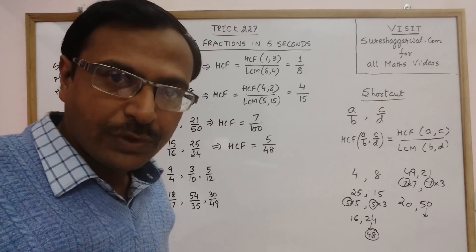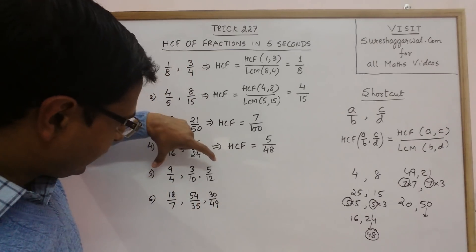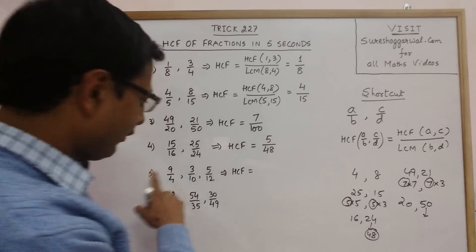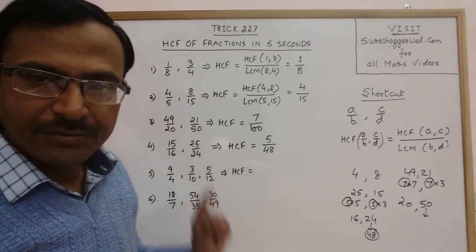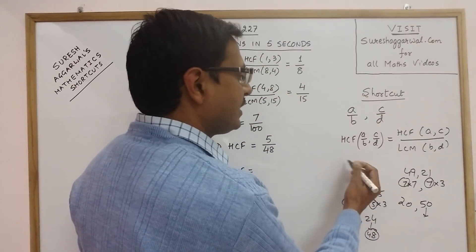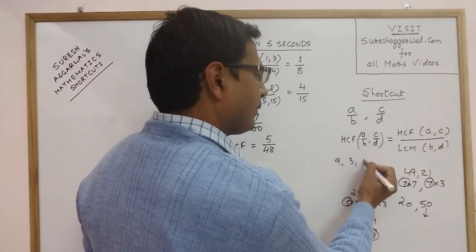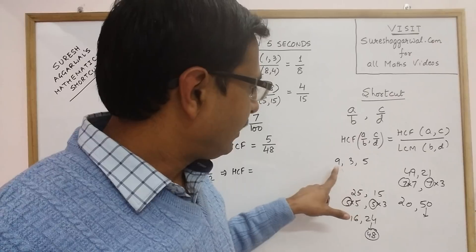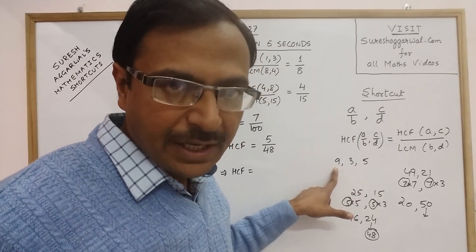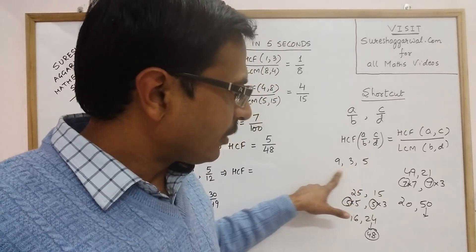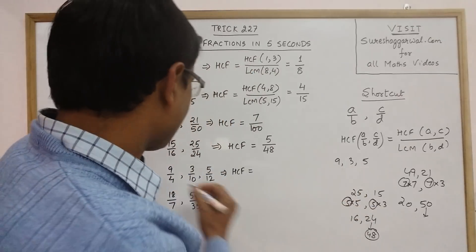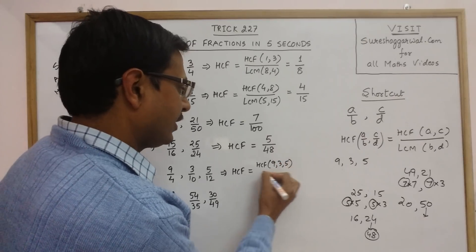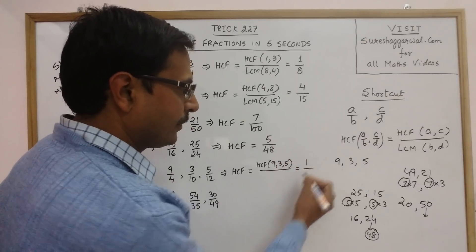You can repeat this method for finding the HCF of more than two fractions as well. Now these are three fractions, and you need to find the HCF of three numerators: 9, 3, and 5. Since 3 is a prime number, 5 is a prime number, and the factors of 9 are 3 and 3, there is no common factor between all three numbers. So the highest common factor of 9, 3, and 5 is 1.